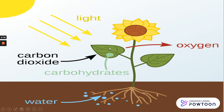بعد لما الاكل يتعمل بيطلع لي إيه في الآخر؟ بيطلع لي sugar — glucose. نوع من أنواع الاكل، مش نفس السكر اللي بنكله، بس compound — نوع من أنواع الاكل أو chemical. بيطلع لي sugar أو food أو glucose. وبيطلع لي كمان oxygen.